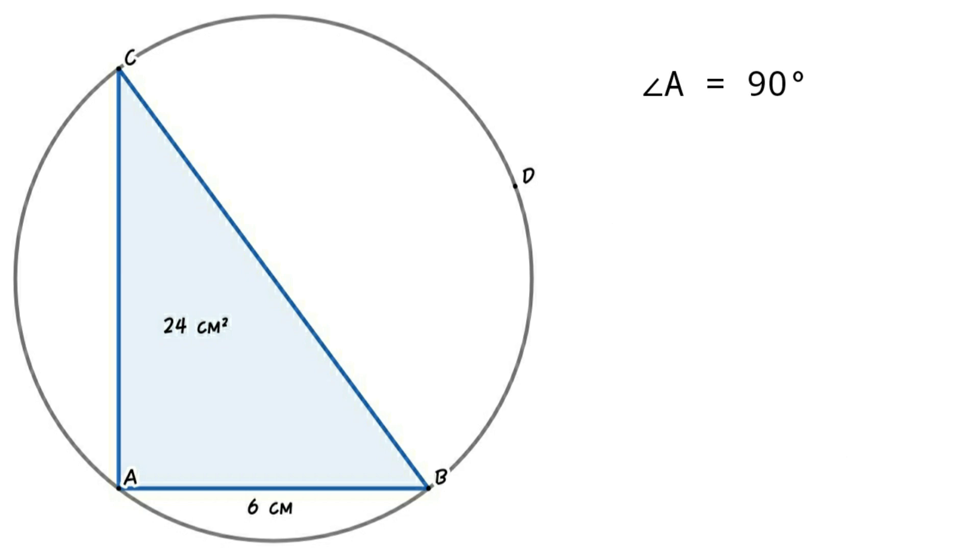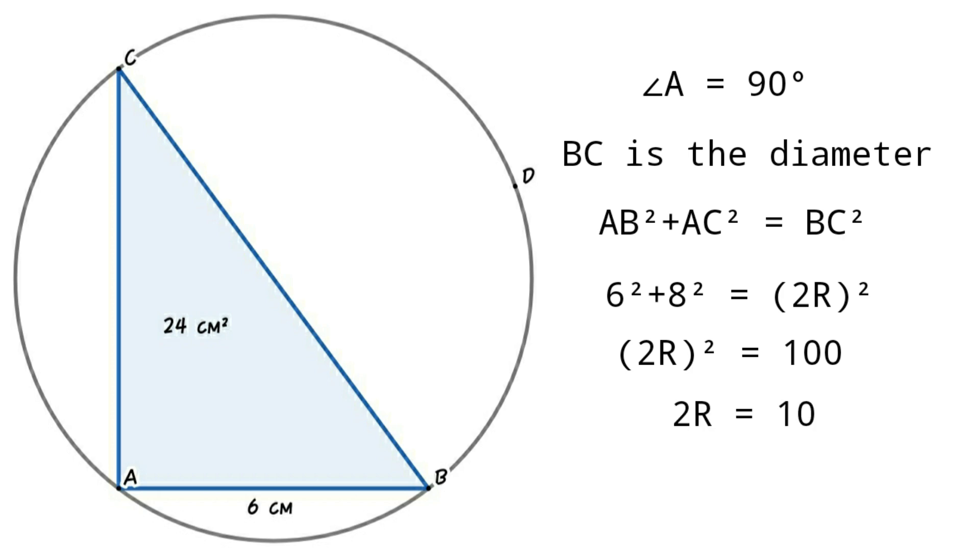In triangle ABC, angle A equals 90 degrees, so BC is the diameter. Apply Pythagorean theorem in triangle ABC. Then AB squared plus AC squared equals BC squared. 6 squared plus 8 squared equals 2R squared. So 2R squared equals 100, 2R equals 10. That is, R equals 5.